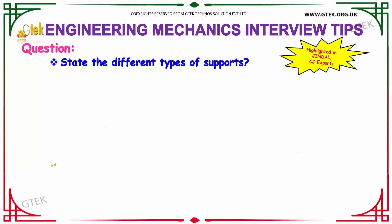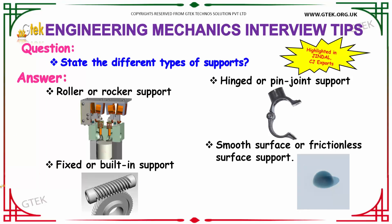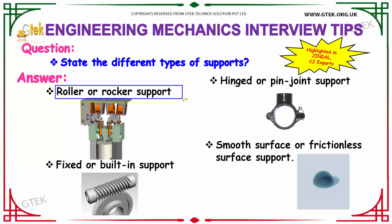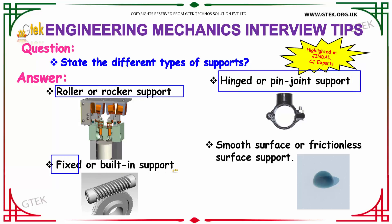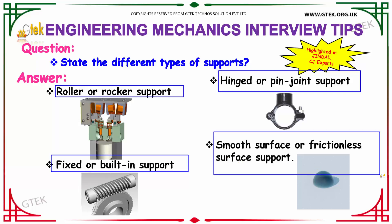State the different types of supports. The different types of supports are: roller or rocker support, hinged or pin joint support, fixed or built-in support, and smooth surface or frictionless surface support. These are the four different types of supports in engineering mechanics.